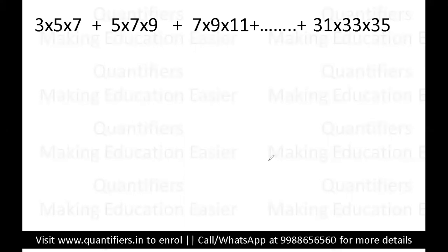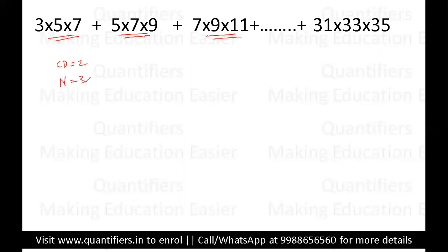Now let us come to the shortcut. First of all, you have to identify the common difference. Since it is like an AP, the common difference here is two. Next, see how many numbers are there in each term — there are three numbers, so I'm taking n equal to three. Here n represents how many numbers are there in every term.